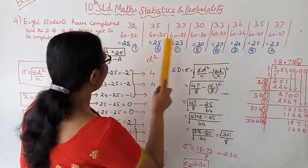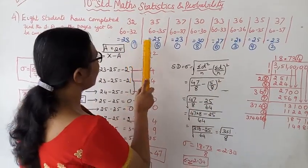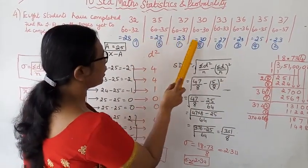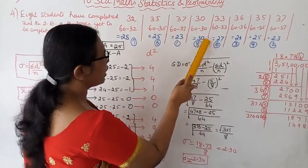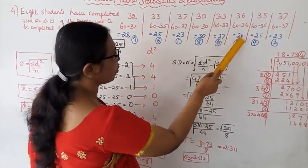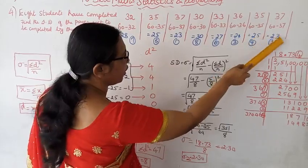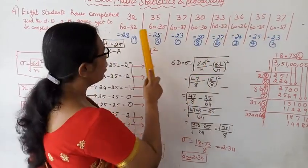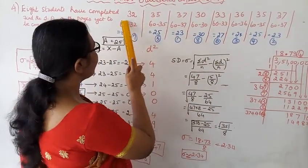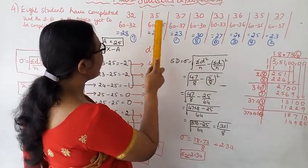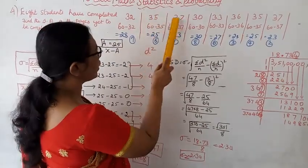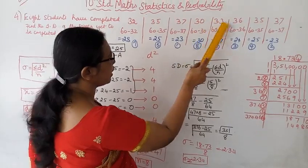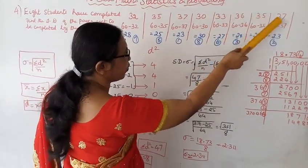The answers for pages yet to be completed are: 28, 25, 23, 30, 27, 24, 25, 23.